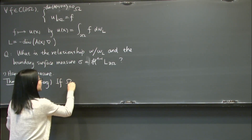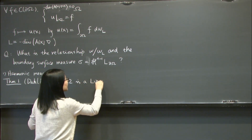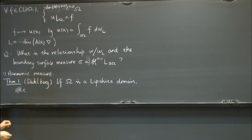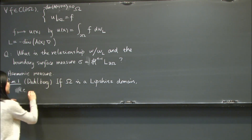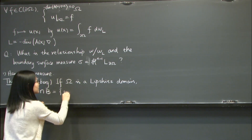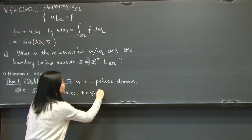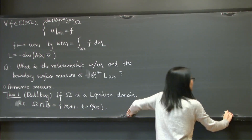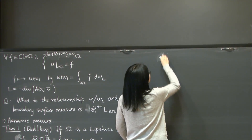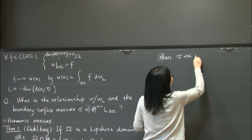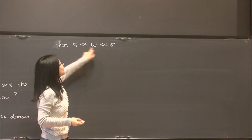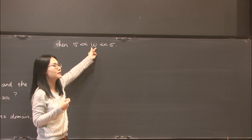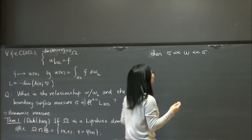Dahlberg shows that if Ω is a Lipschitz domain — that is, locally the domain is the region above a Lipschitz function Φ — then the harmonic measure and the surface measure are mutually absolutely continuous. This means these two measures have the same null sets: if a set has surface measure zero, then the harmonic measure is zero, meaning the Brownian traveler doesn't see that region, and vice versa.